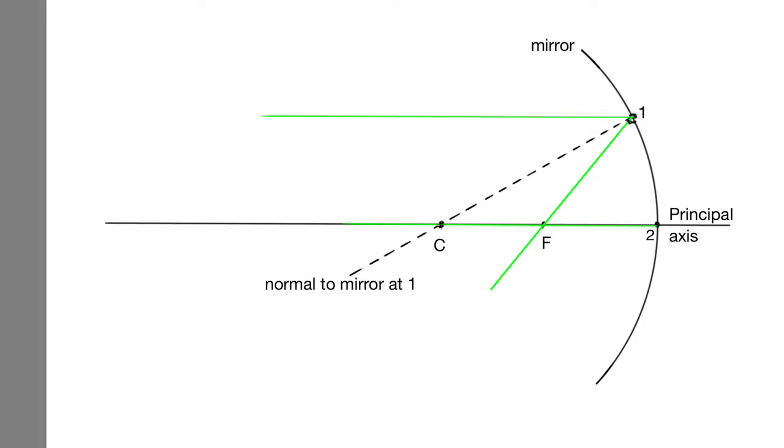On it, I've marked the radius of curvature, C. So the distance from C to the mirror is equal to R. So this distance here is R, where R is that radius.